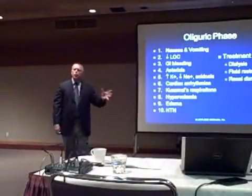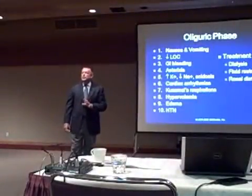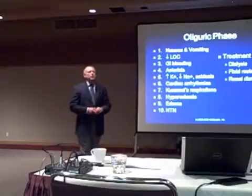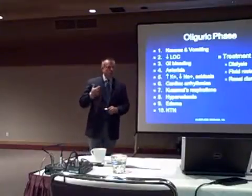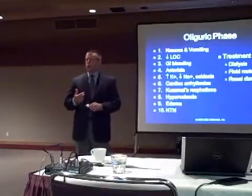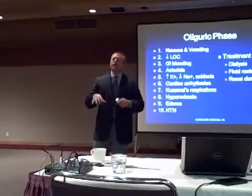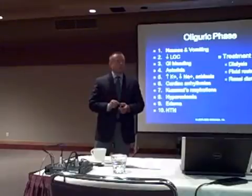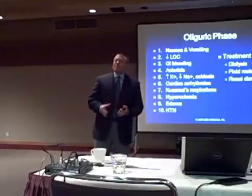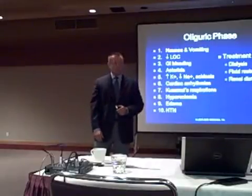Acute renal failure goes through phases, the first of which is the oliguric phase. In the oliguric phase, your patient is going to look like a patient who has chronic renal failure. In other words, your patient is going to have symptoms of oliguria — decreased urine output — plus the symptoms of an increase in urea nitrogen.